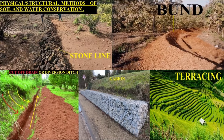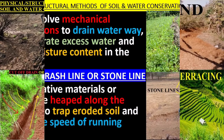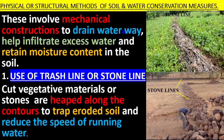Physical or structural methods of soil and water conservation. These involve mechanical constructions that drain waterways, help infiltrate excess water, and help retain moisture content in the soil.